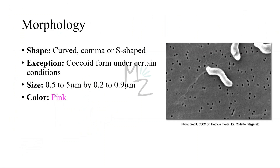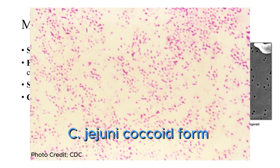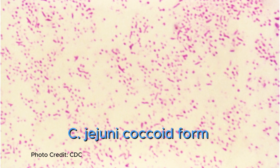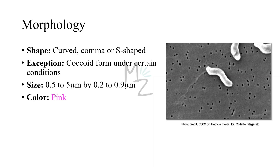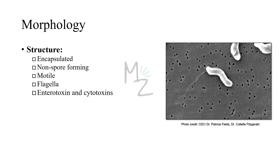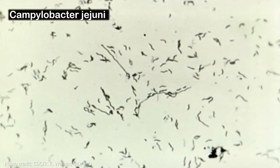Morphology. Campylobacter are curved gram-negative rods that appear either comma- or S-shaped. As an exception, Campylobacter becomes coccoid when exposed to certain conditions like atmospheric conditions. Campylobacter jejuni varies in size from 0.5 to 5 micrometres by 0.2 to 0.9 micrometres. It is pink-coloured because it's gram-negative. It is an encapsulated bacterium. It is not responsible for forming spores. It is motile because it has a polar flagella. It produces certain toxins: enterotoxins and cytotoxins.